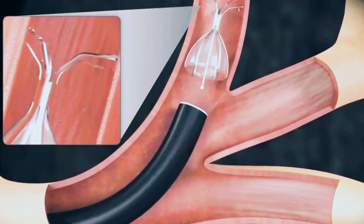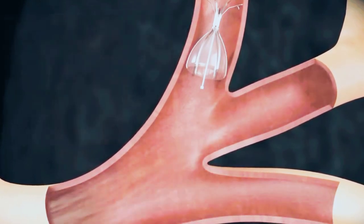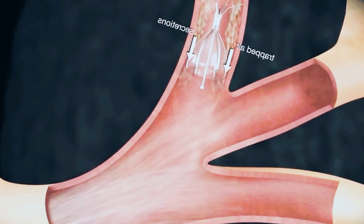There are five anchors that gently penetrate the surface layer of the airway preventing migration. Once in place, the IBV valve expands and contracts with breathing, blocking distal air flow while allowing trapped air and fluids to escape.